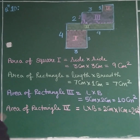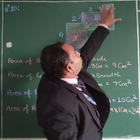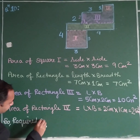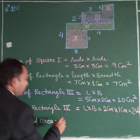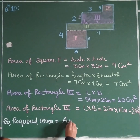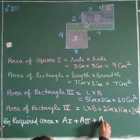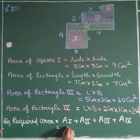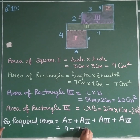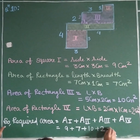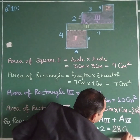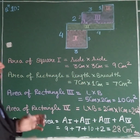Now we know the area of region 1, region 2, region 3, and region 4. We want to find the combined total area of the figure. Required area equals area of rectangle 1 plus area of rectangle 2 plus area of rectangle 3 plus area of rectangle 4, which is 9 + 7 + 10 + 2 — all in cm squared. That gives 9+7=16, 16+10=26, 26+2=28 centimeters squared. This is your result.